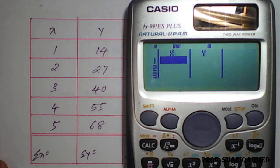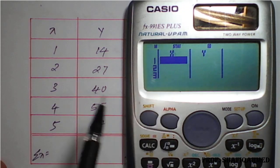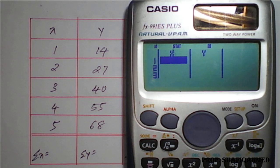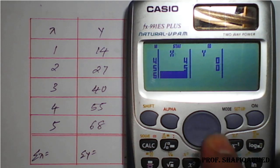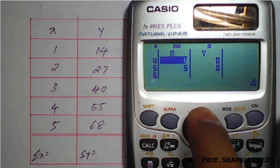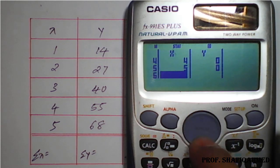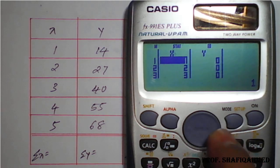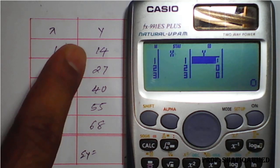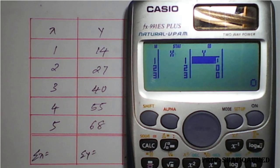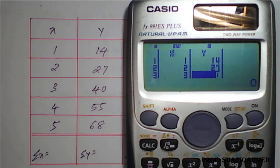Once you press 2, it will ask for the value of X and then Y. Enter the X values from the table: press 1 equal, 2 equal, 3 equal, 4 equal, 5 equal. Once entered, check with the center button to confirm all values are correct, then use the side cursor to jump to the Y column.